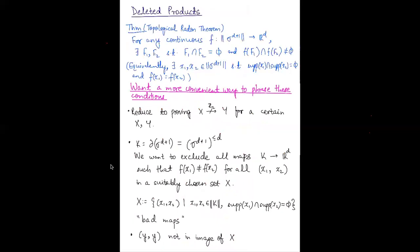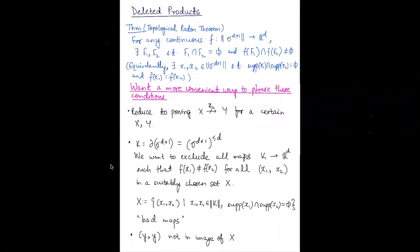Now we'll start moving towards a proof of the Topological Radon theorem. Recall the statement: for any continuous map f from sigma_{d+1} to R^d, there is some pair of disjoint faces whose images intersect. This is equivalent to saying there must be a point x1 in F1 and x2 in F2 which get mapped to the same thing. Since they come from disjoint faces, their supports will be disjoint. To prove this, we want a more convenient way to phrase these conditions, so let K be the boundary of sigma_{d+1}.